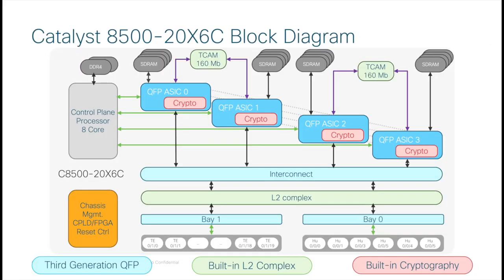Here is a high-level block diagram of the C8500 20X6C. In gray on the left, you can see the control plane processor which runs IOS XE and all management processes, with 64 gigabytes of dedicated DDR4 memory. Next to that are four QFP 3.0 ASICs, each with dedicated RAM, crypto engines, and packet buffer memory. There are two 160 megabit TCAM banks kept in sync, with two QFP ASICs sharing access to each TCAM — avoiding contention and maintaining high-speed forwarding.